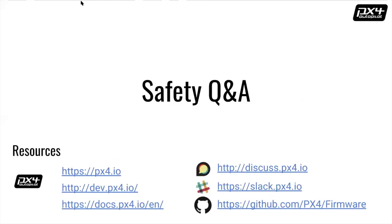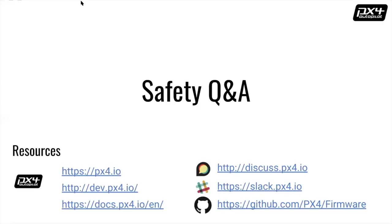We have a specific question about failsafes for BVLOS. We're looking into that. There is a pull request which enables staged failsafe management with an automated landing using a lidar to not crash into the ground, and also parachute controls for that. And that's all guided by SORA requirements.